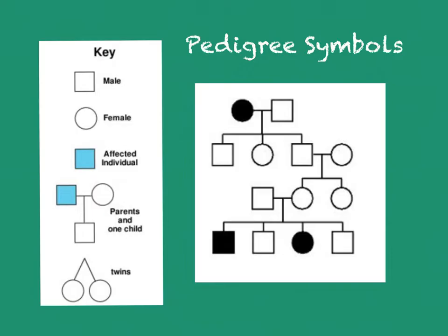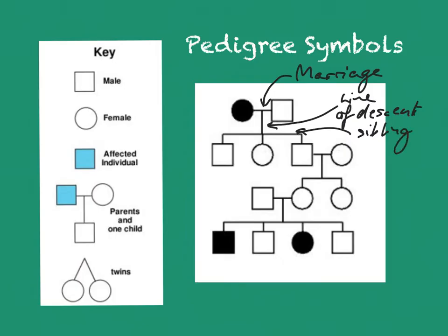The next thing you have to decipher in this pedigree is all the lines. This line is called the marriage line, which means this couple is married and they have kids together. This line is called the line of descent, and that means after that line you have the offspring. The line that goes across is called the sibling line, which indicates that these are siblings.